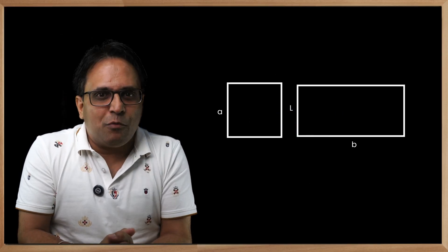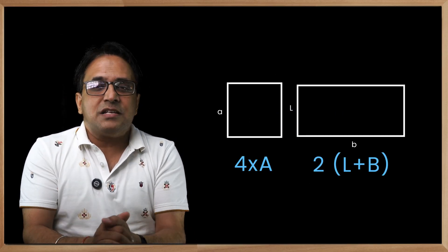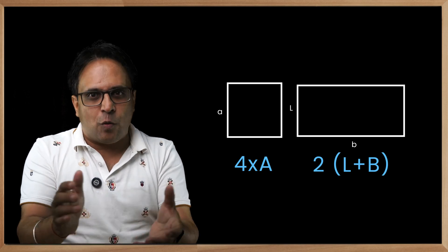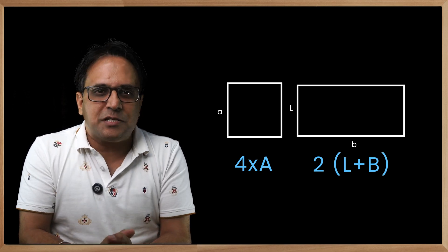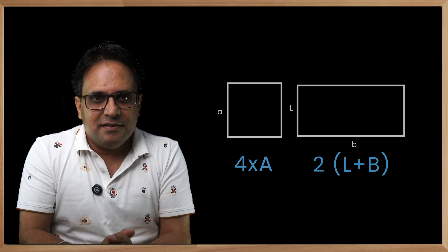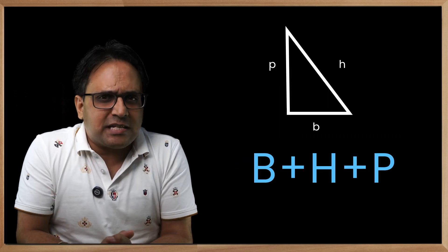For square and rectangle, it is the sum of all sides, coming out as 4a for square and 2(length + breadth) for rectangles. For triangles, it is base + hypotenuse + perpendicular.